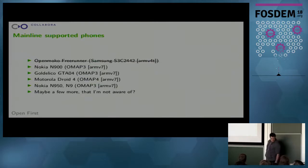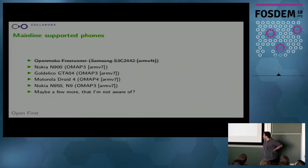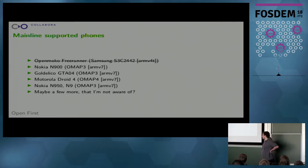But before doing that, let's have a look at other supported phones. When I started getting interested in kernel development, I had a Freerunner, which was pretty well supported by Debian, but the kernel never really reached mainline. So when I had a new phone, I started working to get everything mainline, which is the Nokia N900 — pretty well supported nowadays.